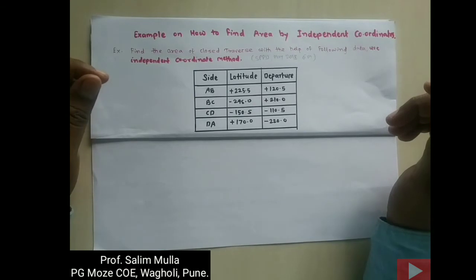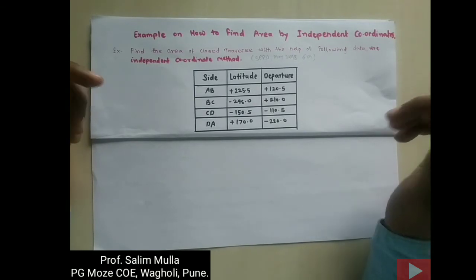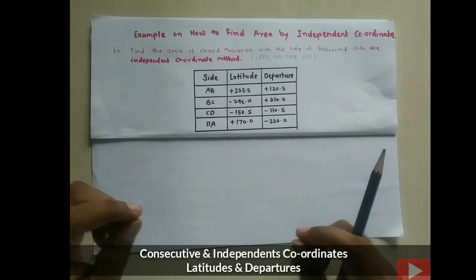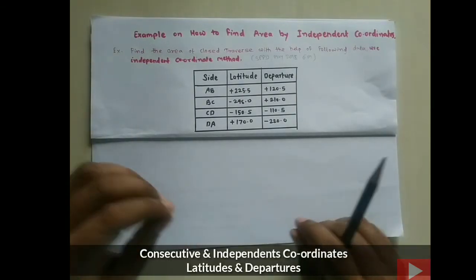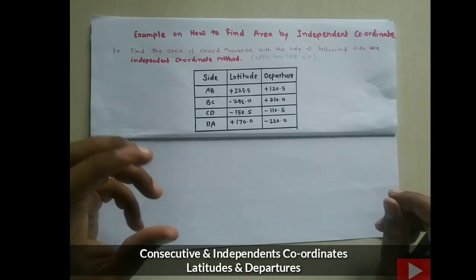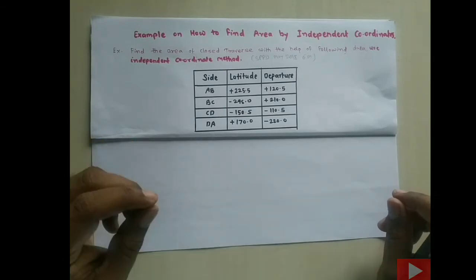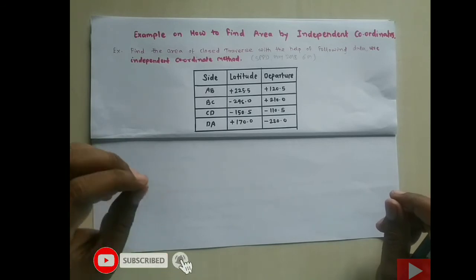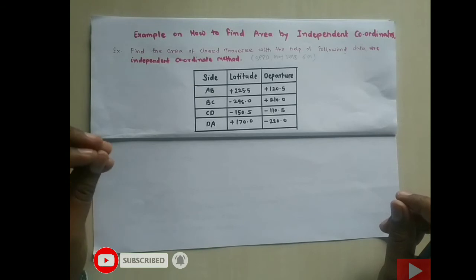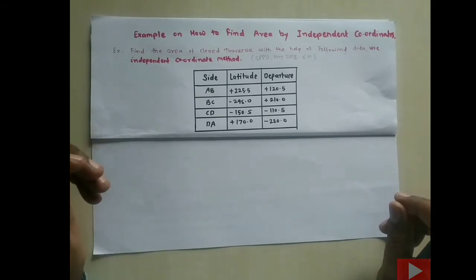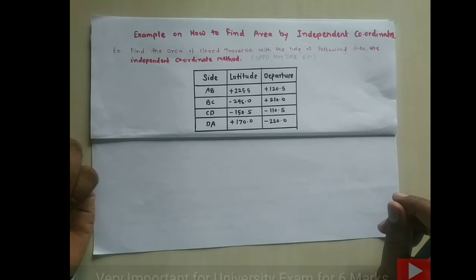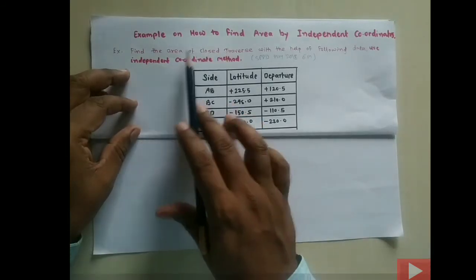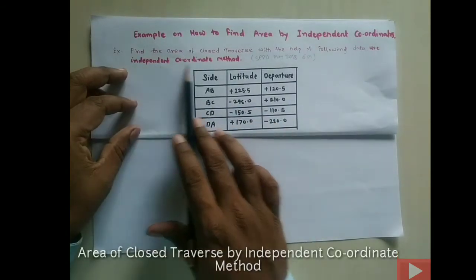Hello everyone, welcome back again. I am Professor Selim Mulla from P.G. Mosey College of Engineering, Wagholi, Pune. In the last video lecture we covered the concept of consecutive coordinates and independent coordinates. In consecutive coordinates we learned about latitudes and departures, northing, southing, easting, and westing. Theoretically, we learned how to determine the area of a closed traverse using the independent coordinate method. In this video lecture we will learn how to determine the area of a closed traverse by using the independent coordinate method practically.